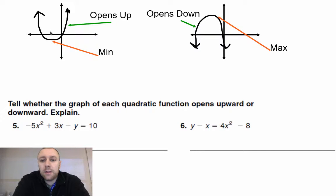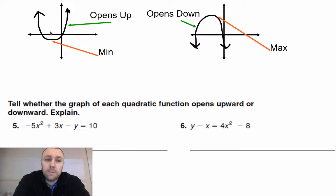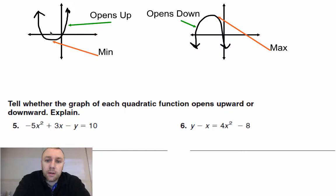To think about this: if you throw a ball up in the air it's going to look like the second example, so it has a maximum height. Versus the first example which is more like a pendulum swinging where it has the lowest height.